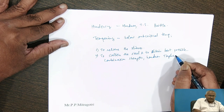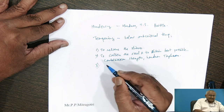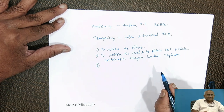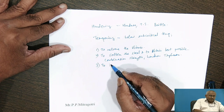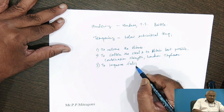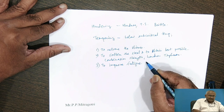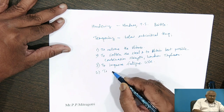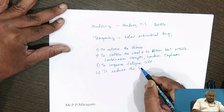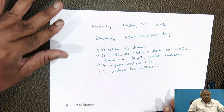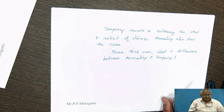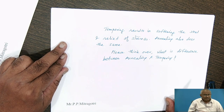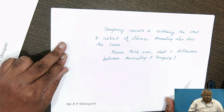To obtain the best possible combination of strength, hardness, and toughness — this can only be achieved through hardening and tempering treatment. The next objective is to improve fatigue life. Fatigue life of the steel is improved by hardening and tempering, and also to reduce the brittleness of the steel. Now, I will pose one question: tempering results in softening and relief of stresses — annealing also does the same. Please think over what is the difference between annealing and tempering.